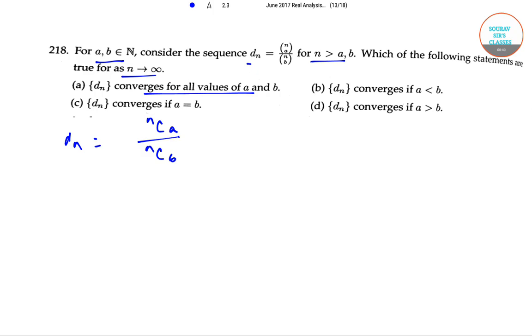Now, take a equals 2 and b equals 1. Then d_n equals (n-1)! divided by 2!(n-2)!, which is (n-1)/2, and this tends to infinity as n tends to infinity.